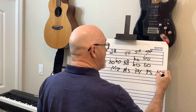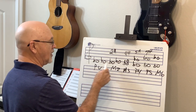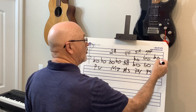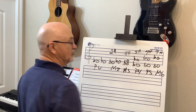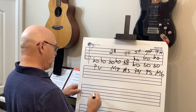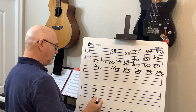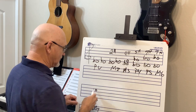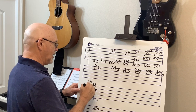A major sixth from D-flat is B-flat — the sixth note in the D-flat scale: D-flat, E-flat, F, G-flat, A-flat, B-flat. There are nine half steps from D-flat to B-flat. Then the major seventh: D-flat to C is a major seventh, and this is eleven half steps — we went up a whole step from B-flat to C.